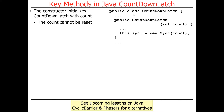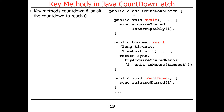All you can do is count it down — you can't reset it. You have to make a whole new object if you want to give it a different number or use it again after it's been counted down. The key methods — there are really just two of them: await and countDown. These methods, as the names imply, are used to count down and wait for the count to equal zero.